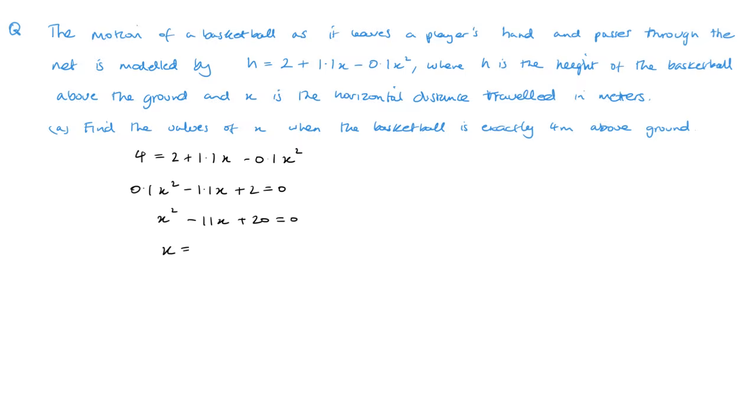And then using the formula, minus b plus or minus square root of b squared minus 4ac all over 2a. And we get 8.70 or 2.30. So two answers there.